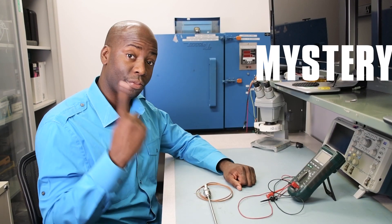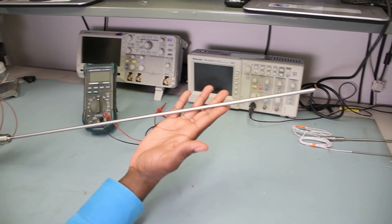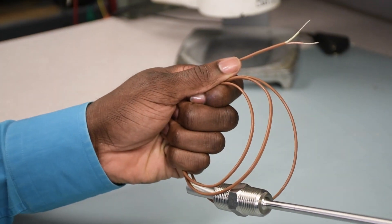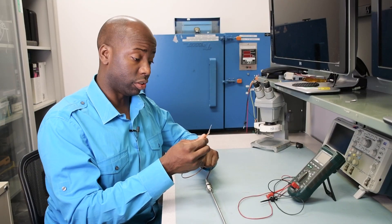With these points in mind, we can use a process of elimination to figure out what's what. Now, here's our first mystery sensor. Okay, this is a metallic sheath probe with a long insulated cable and a two-wire construction.